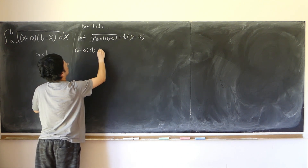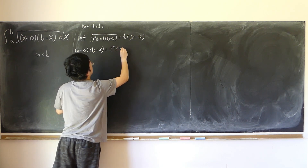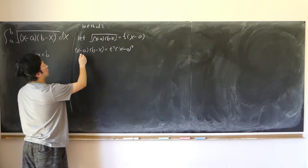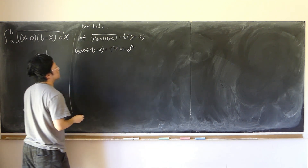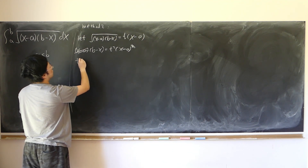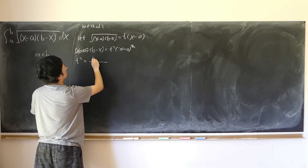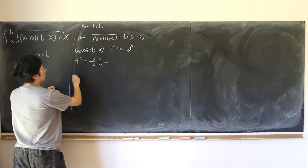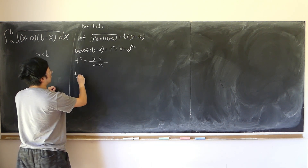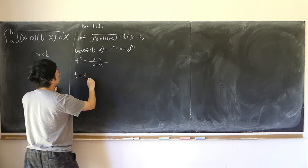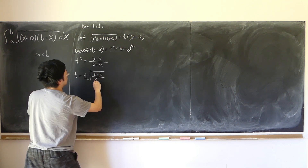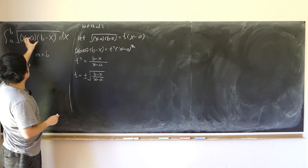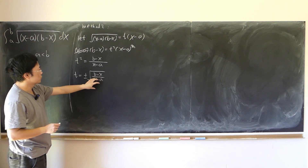Then (x minus a)(b minus x) equals t² times (x minus a)². Assuming x ≠ a, cancel (x minus a), giving: t² equals (b minus x)/(x minus a). Since the inside of the square root is positive, this fraction is definitely positive, so t must be positive.